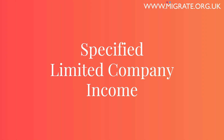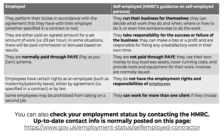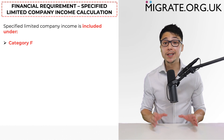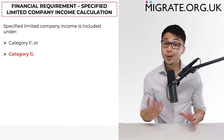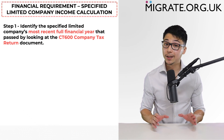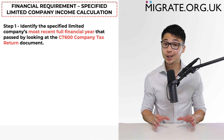Specified limited company income — we discussed the specified limited company definition earlier in this video. If you're still not sure whether the sponsor's employing company is a specified limited company, you may wish to watch part 2 of our three-part common mistakes YouTube video series, which discusses this in great detail. We also have a comprehensive article on our website, migrate.org.uk. Most commonly, specified limited company income is included under category F. It can also be included under category G, but since category G involves a lot more paperwork, in 99% of instances partners can completely disregard category G.